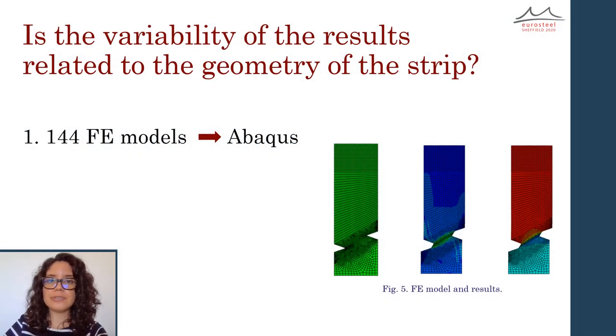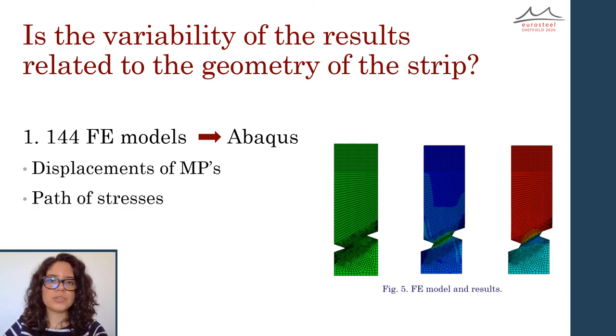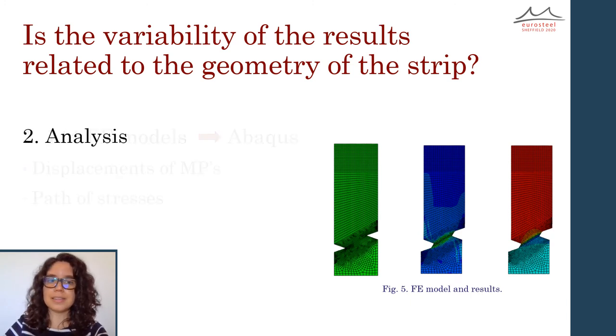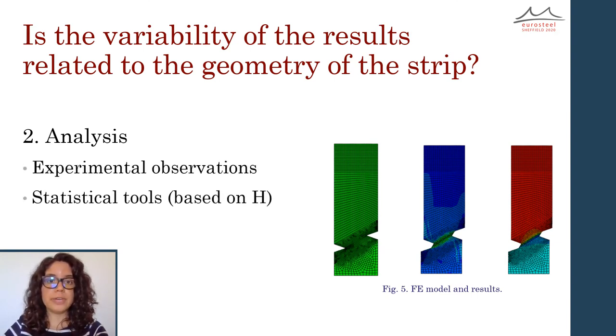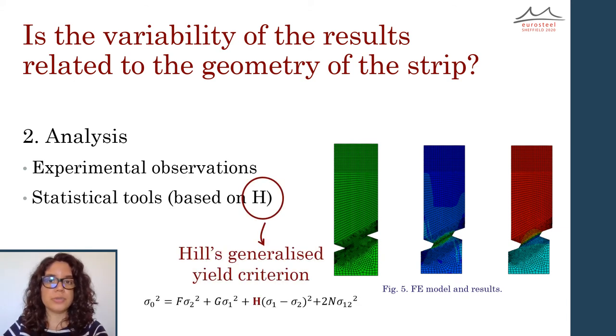To determine if the geometry is indeed accountable for the dispersion in the results, 144 finite element simulations were carried out using the software Abaqus and Python scripting. For every simulation, the displacement of the measuring points and the path of the stresses were collected. Later, the results were analyzed in terms of experimental observations and statistical tools based on the variation of H, being H one of the parameters in Hill's generalized yield criterion presented before.